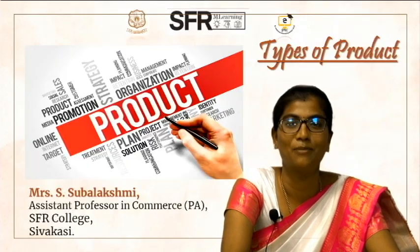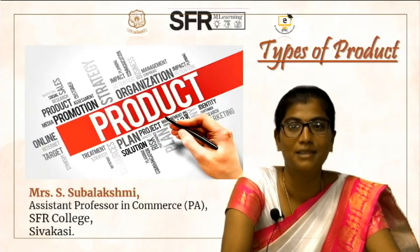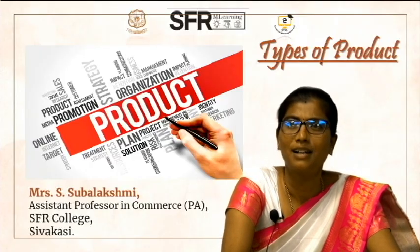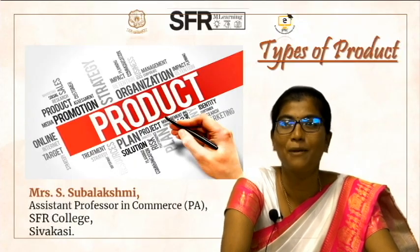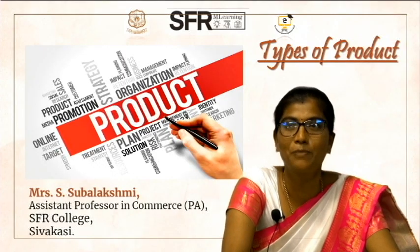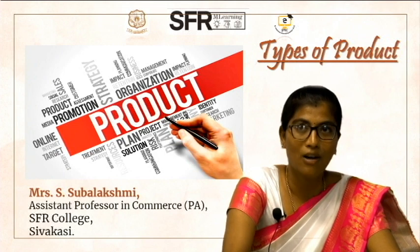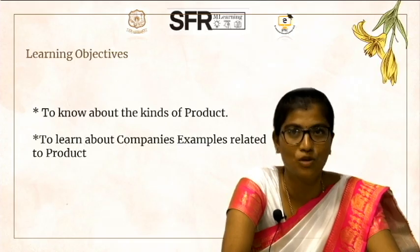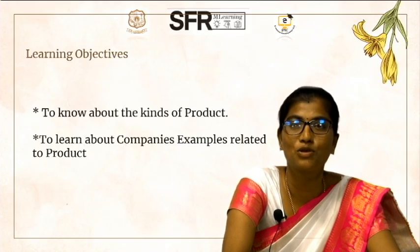We know that the product is the main piece of marketing mix. The four pieces of marketing are the product, price, place, and promotion. The primary piece — the first piece — is product. In this video we can see about the product and its types. The learning objective is to know about the various kinds of product and to learn about company examples related to the product.